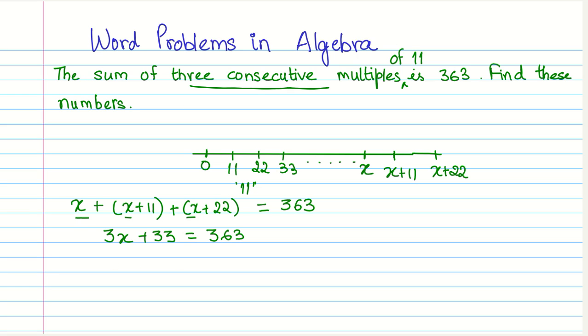So we have 3X plus 33 equals 363. If we solve this, first thing we would do is to transpose this 33 from the left-hand side to the right-hand side, and change its sign due to the transposition.